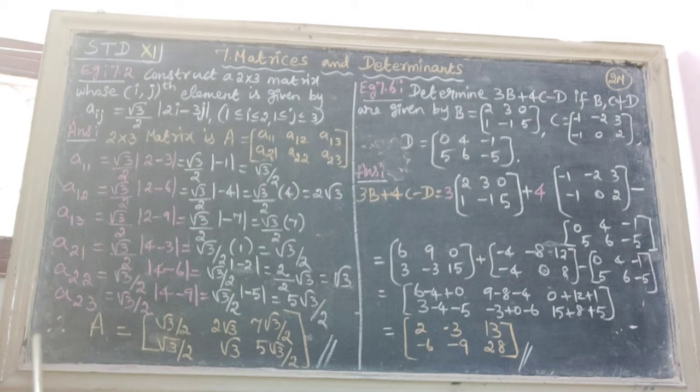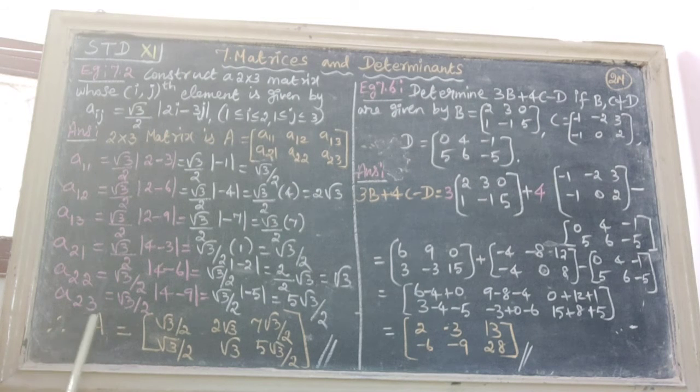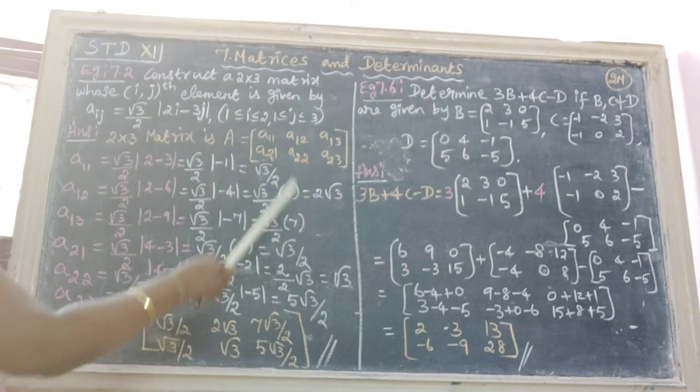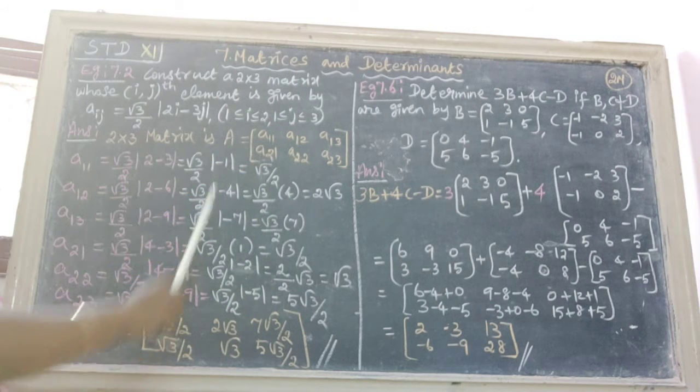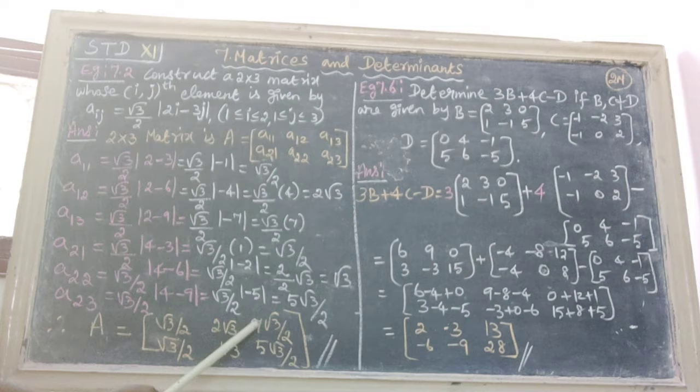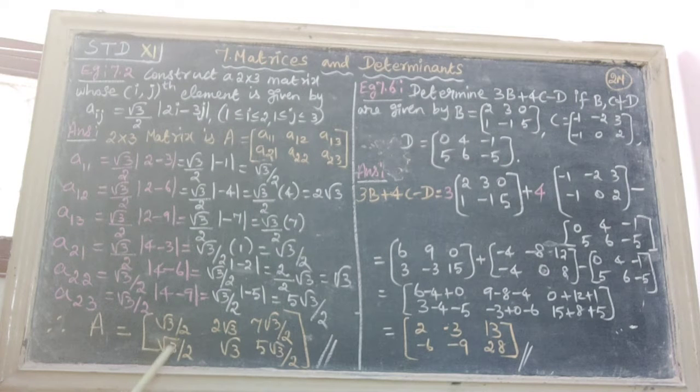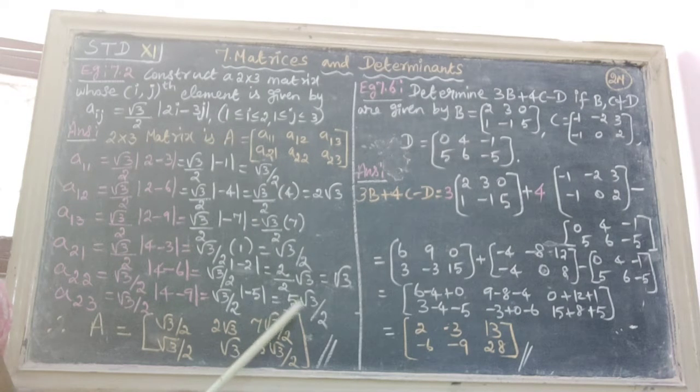Therefore the required matrix capital A equals substitute all the values in the places. Therefore we get root 3 by 2, 2 root 3, 7 root 3 by 2, root 3 by 2, root 3, 5 root 3 by 2.